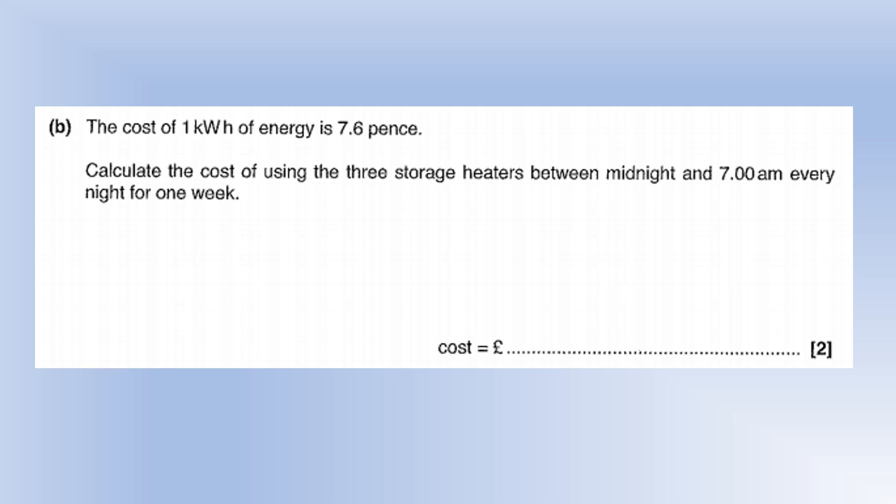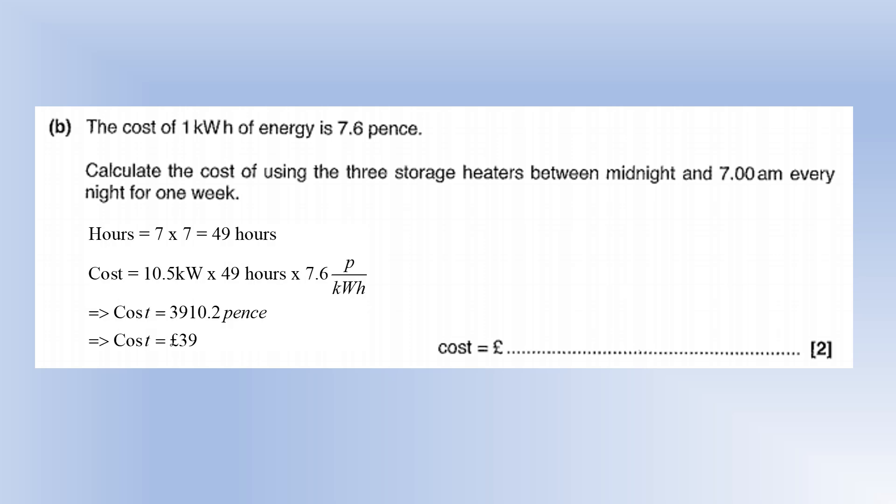Calculate the cost of running three storage heaters from midnight to 7 am every night for one week. That's 7 hours × 7 nights = 49 hours. Total energy: 10.5 kW × 49 h = 514.5 kWh. At 7.6 pence per kWh, total cost ≈ 3910 pence, which is approximately £39.